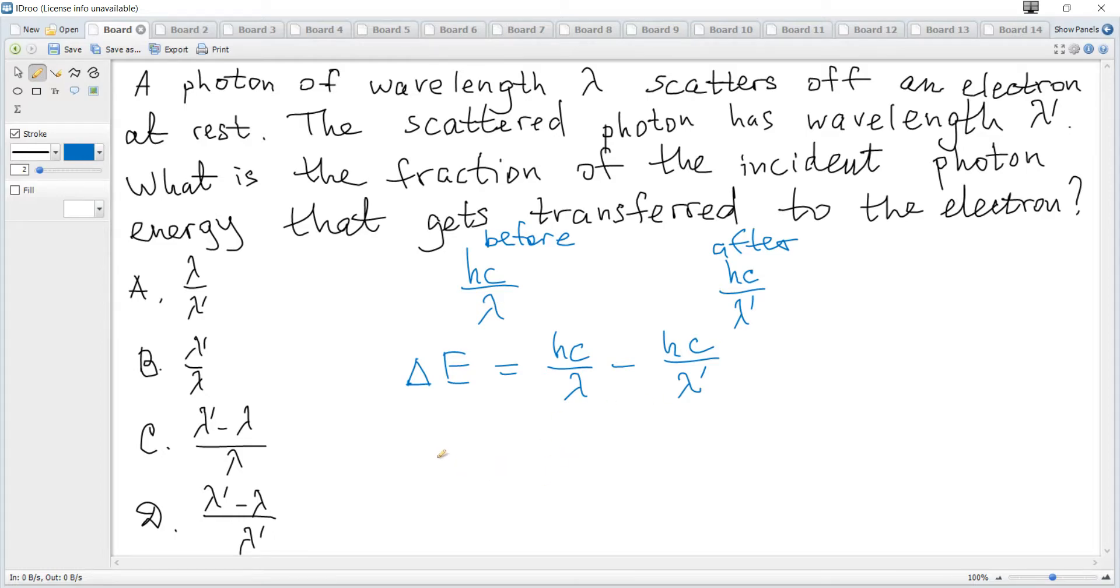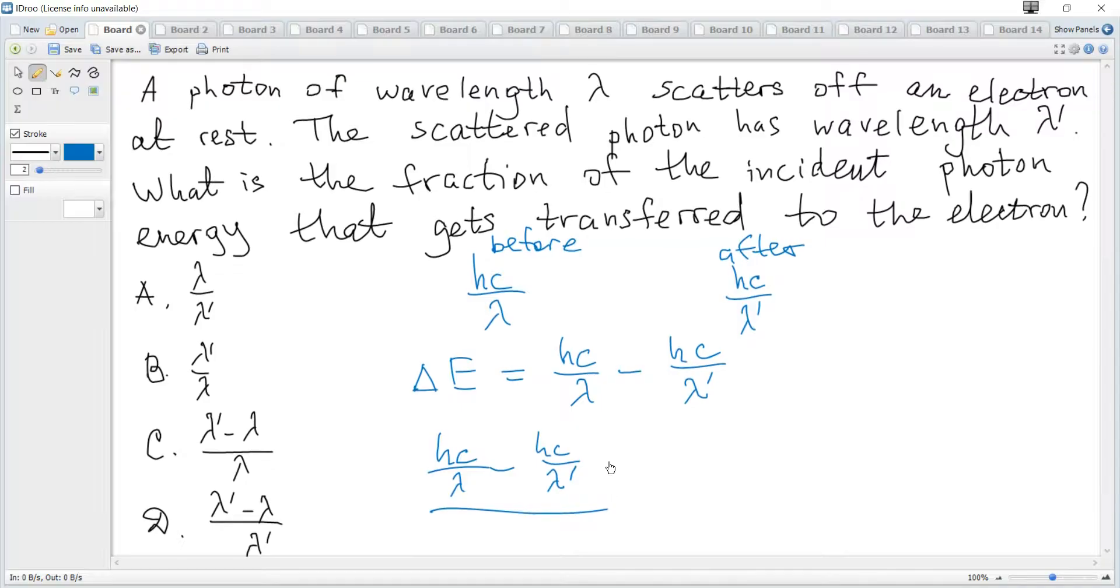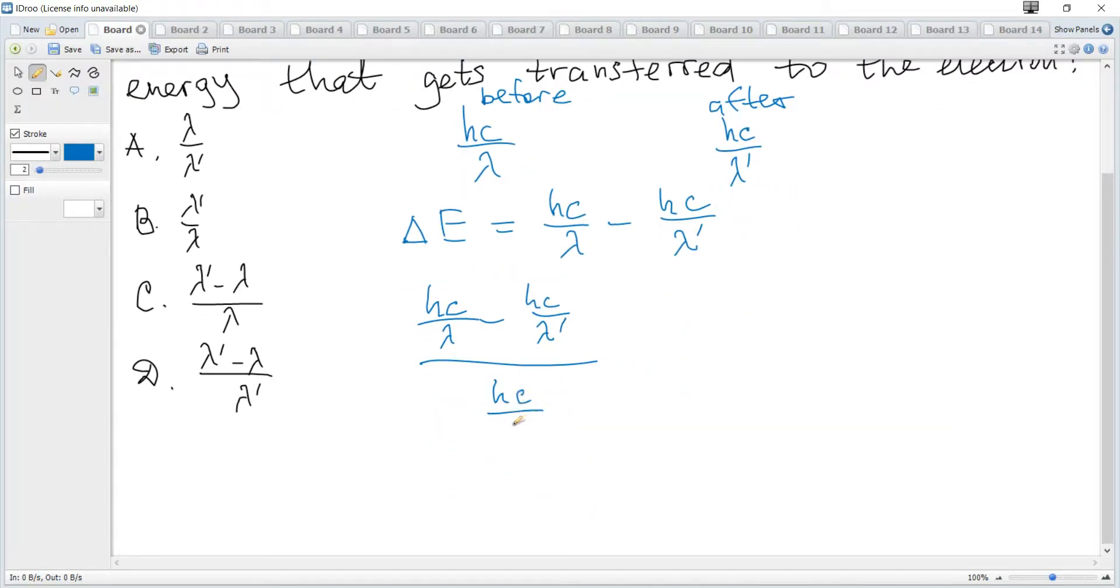We should divide this by the energy of a photon before, so hc over lambda, and we can see that hc cancels. We get 1 over lambda minus 1 over lambda prime divided by 1 over lambda.